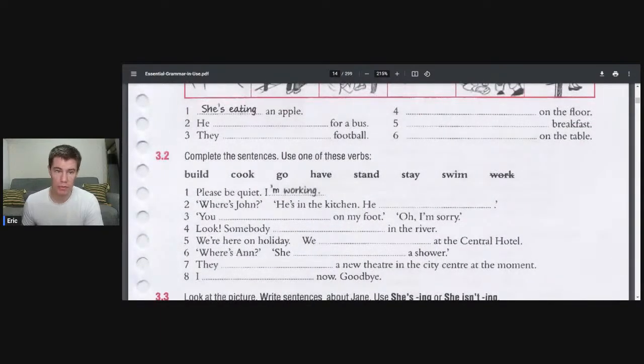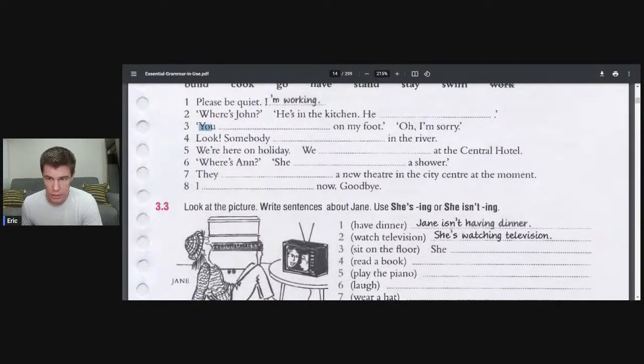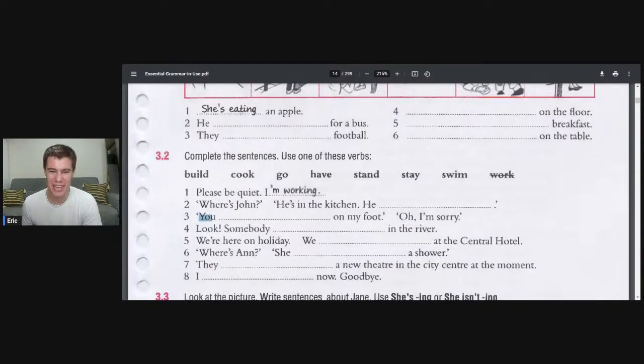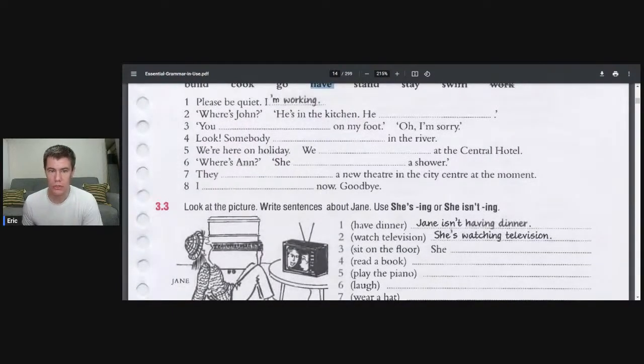Complete the sentences using one of the verbs. Please be quiet, I'm working. Where's John? He's in the kitchen, he is cooking. You are standing on my foot. Oh, I'm sorry. Look, somebody is swimming in the river. We are on holiday, we are staying at the Central Hotel. Where's Anne? She's having a shower. They are building a new theatre in the city centre at the moment. I am leaving now. Goodbye.